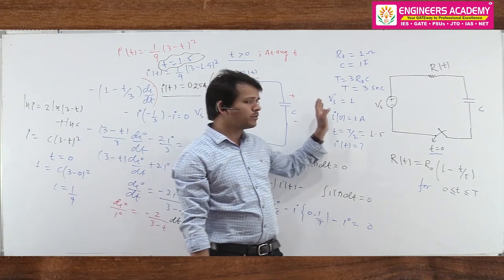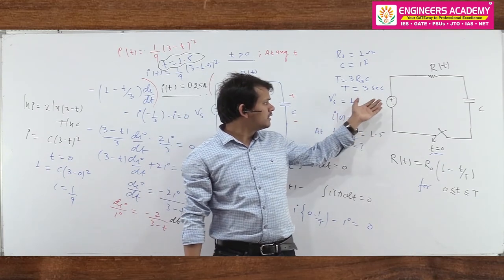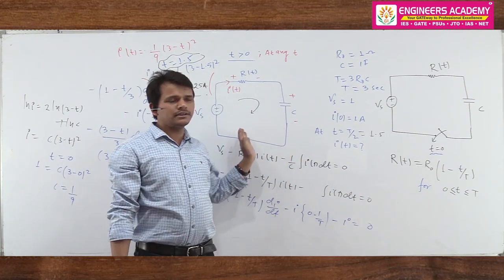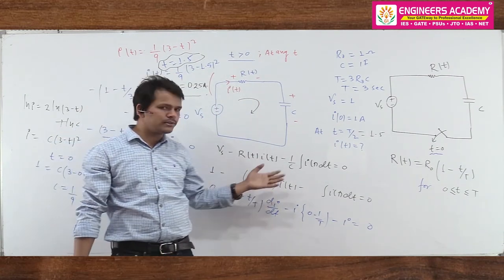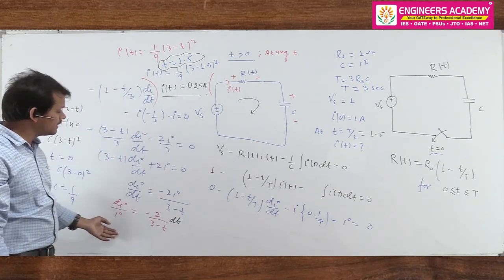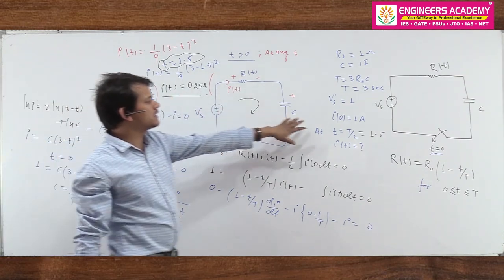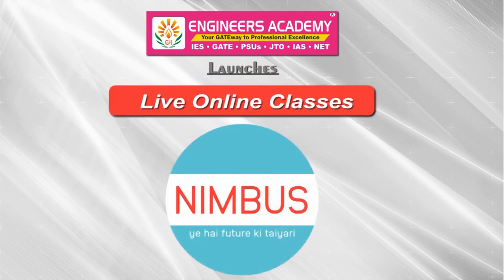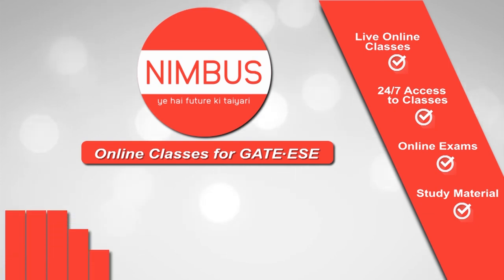Hopefully you understand this question. Since there was no shortcut, we applied KVL with the constant DC source, converted the integral equation to a differential equation by differentiation, used the variable separable method to integrate, applied the initial condition i(0) = 1A to find the constant, and finally obtained the answer. Thank you.